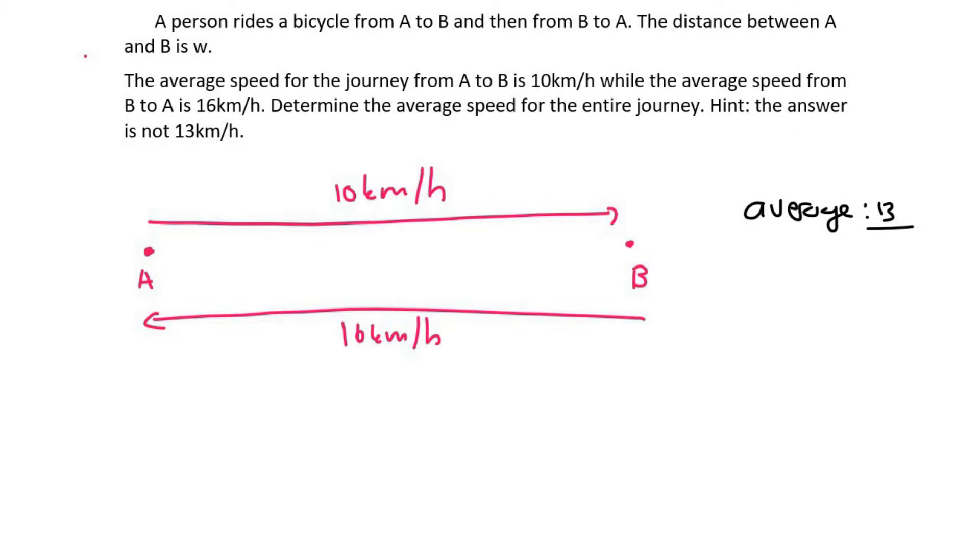Well, well done if you said the 10, because think about it. They're cycling a little bit slower, so they're going to take a little bit longer to get from A to B. So they're going to spend more time doing 10 kilometers than they are 16 kilometers. So because they're going to spend more time at the 10 kilometer per hour speed, we will find that the average is going to be closer to 10 than to 16, because they're spending more time doing that.